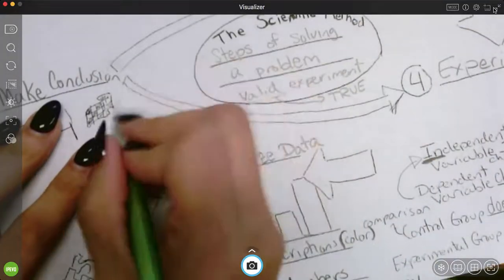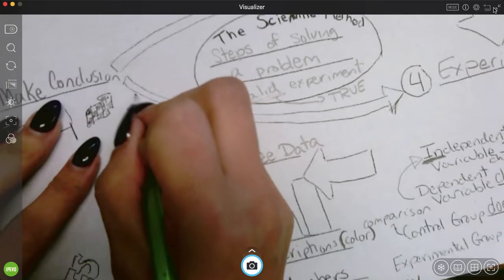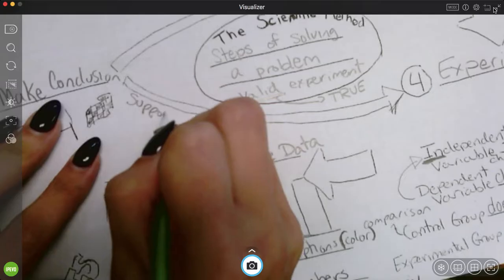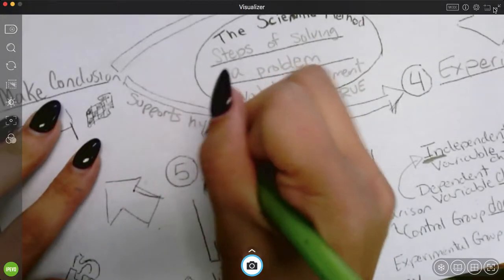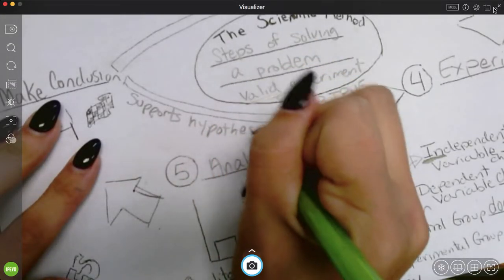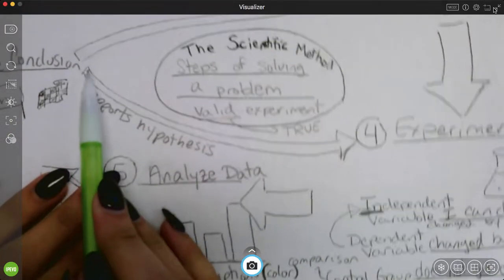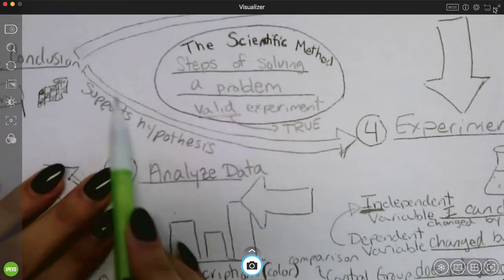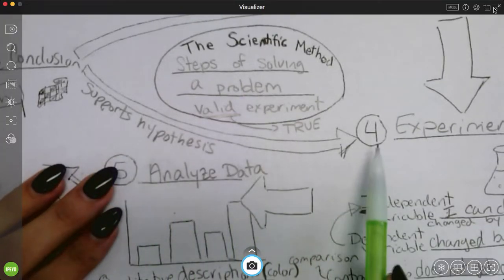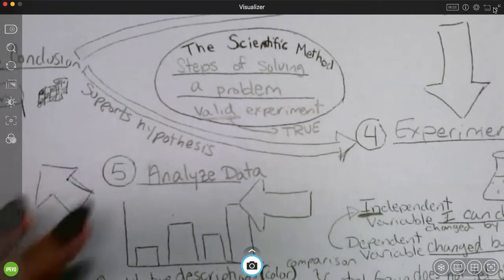The first thing, maybe my conclusion supports my hypothesis. That means that the data matches what I thought was going to happen. If that's the case, I'm going to follow this arrow. And I'm going to repeat the experiment and see if I get the same thing twice.